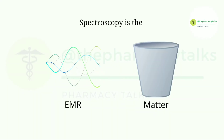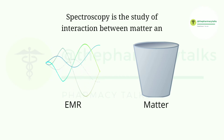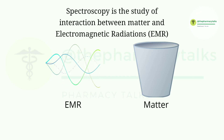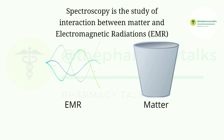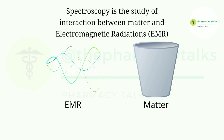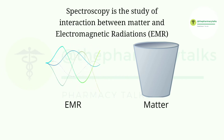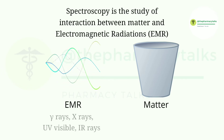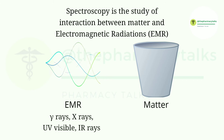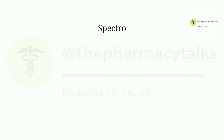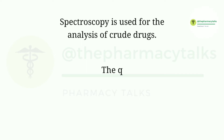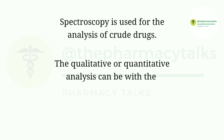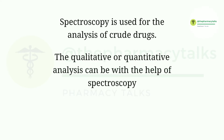Spectroscopy is the study of interaction between matter and electromagnetic radiations. The electromagnetic radiations are waves which can be gamma rays, x-rays, or UV — that is ultraviolet rays. Spectroscopy is used for the analysis of crude drugs. Qualitative or quantitative analysis can be done with the help of spectroscopy.